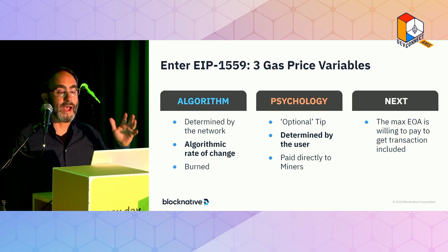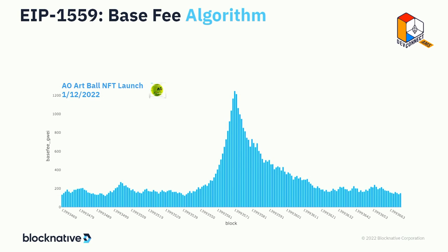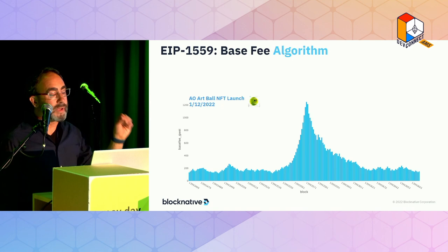Here's the base fee algorithm in action — here's an NFT launch from earlier this year, the AO Artball NFT launch. You can see the network humming along, base fee pretty stable, then the NFT launch hits, blocks start to fill, and the EIP-1559 base fee algorithm does its thing: 12.5% per block, ramping up as fast as it can. It reaches some maximum point, demand drops off, and we see a corresponding decrease. Notably, under 1559 the base fee tends to increase faster than it decreases — it can take hours to get back down.